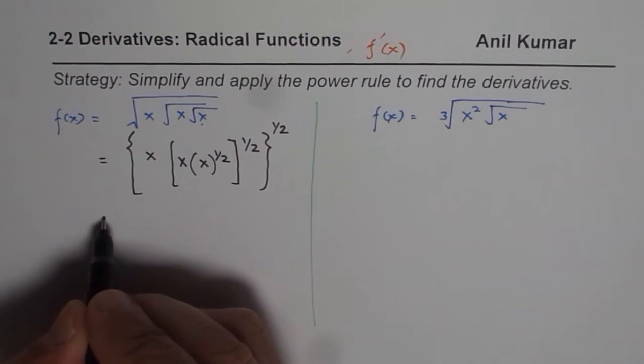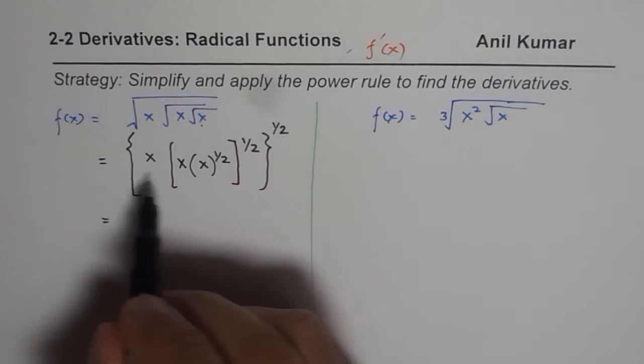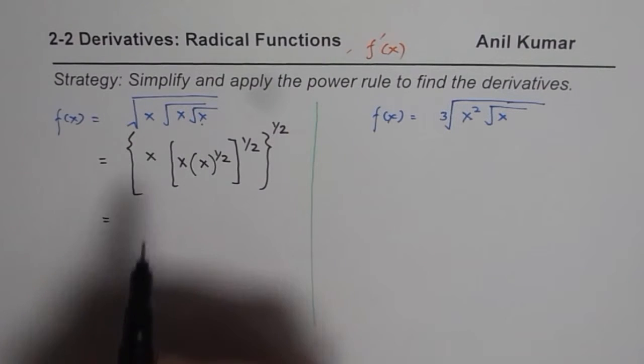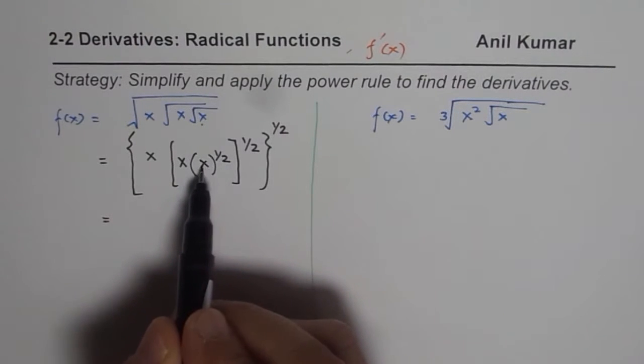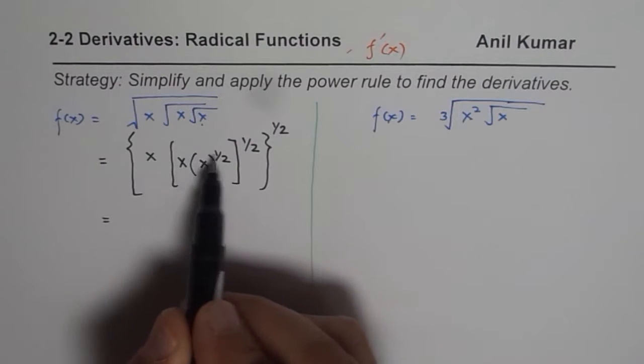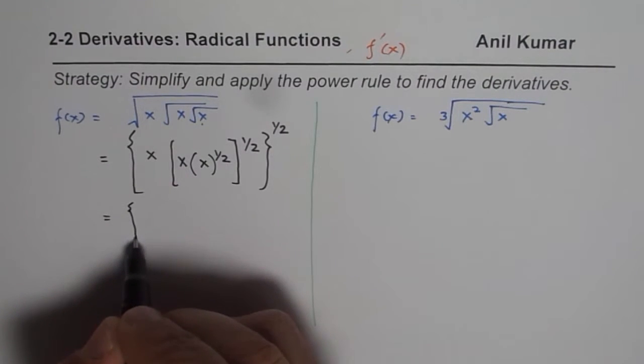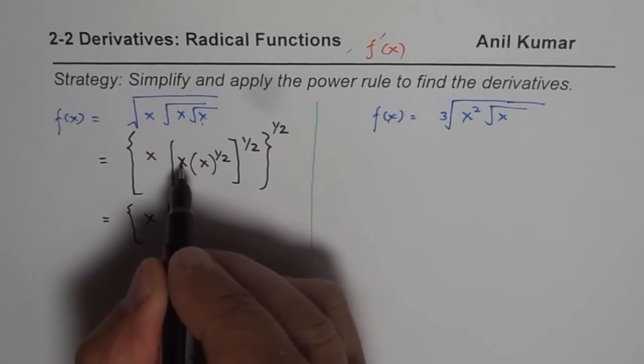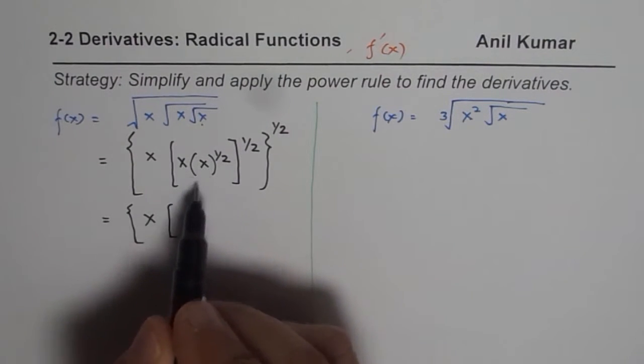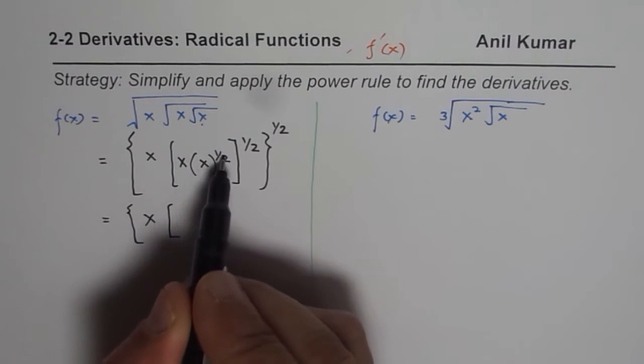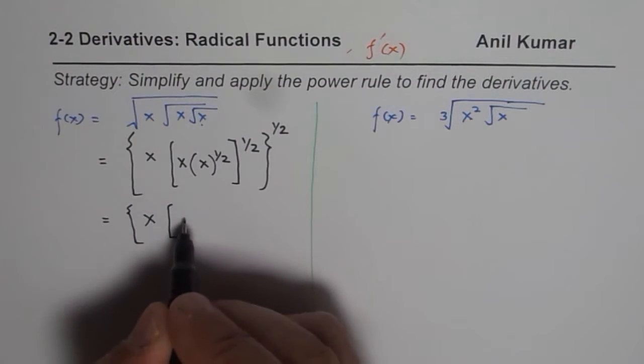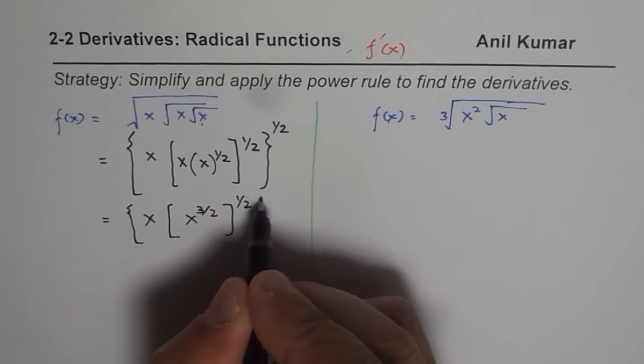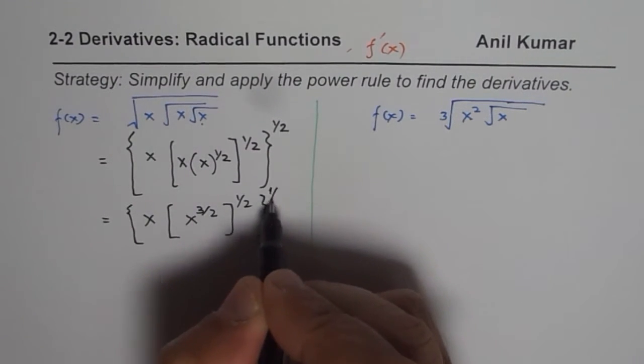So the square root, square root, square root type of a thing, we could write like this. And now let us apply the simple rules which we have learned to simplify this. Always start from inside out. So when you multiply x with x to the power of half, what do you get? Half plus 1 which is 3 over 2.